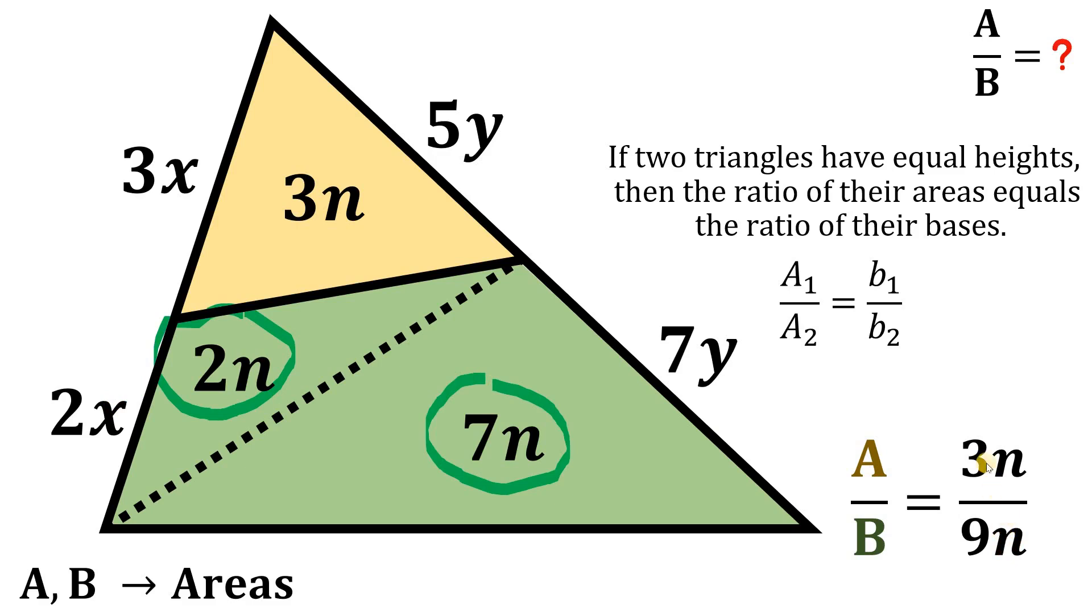This is just 1. It's a common factor. So, this is just 3 over 9. And we can simplify this as 1 over 3.